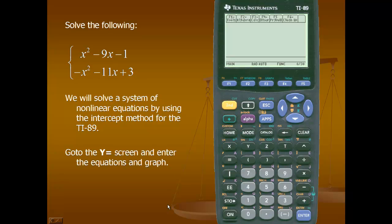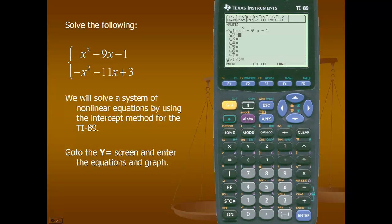First we'll enter the equations into our calculator with the y equals, and then we'll graph the equations. I'm going to enter our y equals area, and for our first equation I'll put in x squared minus 9x minus 1, and for our second equation, negative x squared minus 11x plus 3.